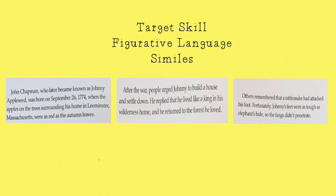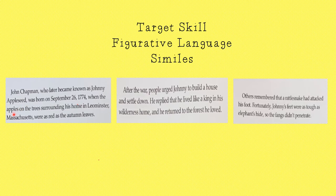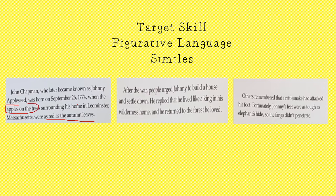Let's get back to our target skill of figurative language and talk about similes, because there were three very obvious similes in the story. The first: John Chapman, who later became known as Johnny Appleseed, was born on September 26, 1774, when the apples on the trees surrounding his home in Leominster, Massachusetts were as red as autumn leaves. What was as red as the autumn leaves? The apples on the tree were as red as the autumn leaves. There's one simile.